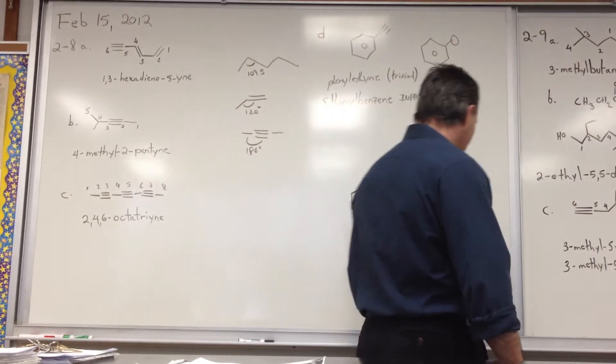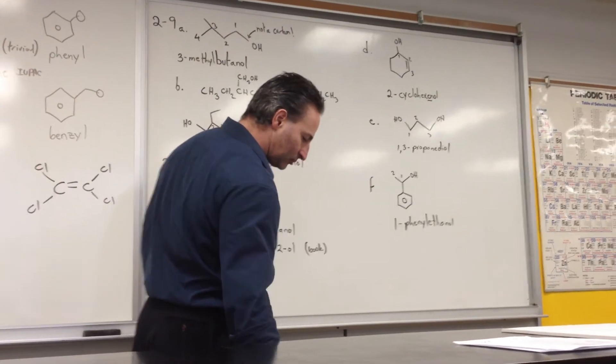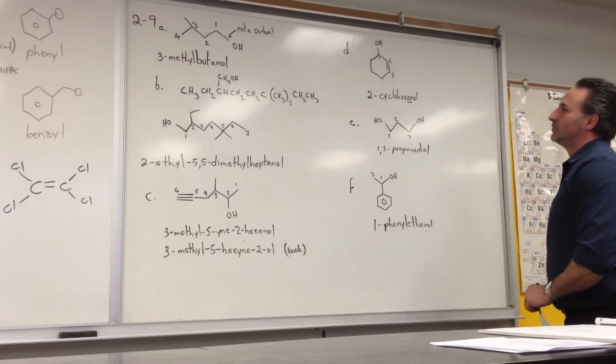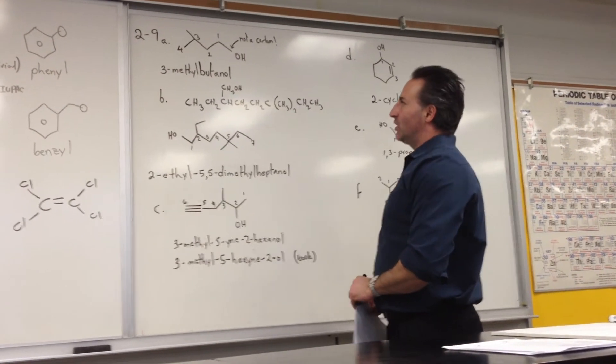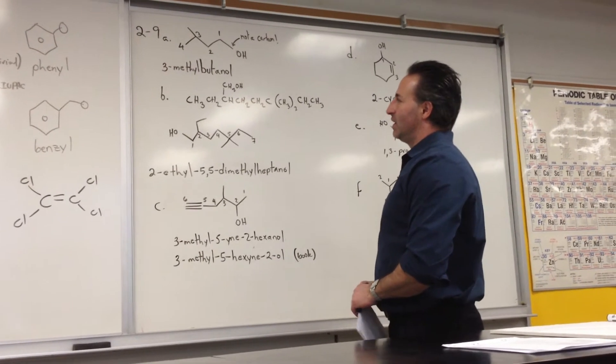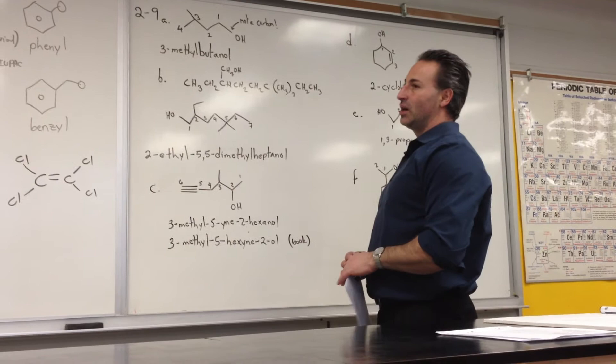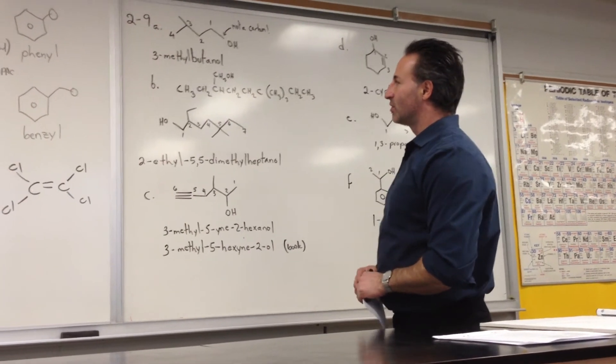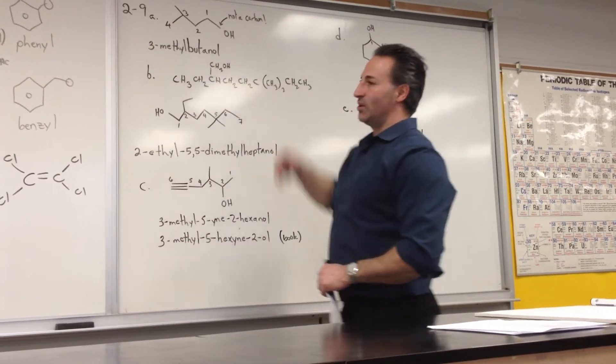The next section is based on alcohols. Anytime you have an alcohol, the root name has -ol added to the end of it. Alcohol has a higher priority than alkyl groups or alkenes or even alkynes. So normally when you have an OH in the presence of any one of those other groups, the OH will take precedence. So the numbering will start from the side that gives the OH the lowest number.